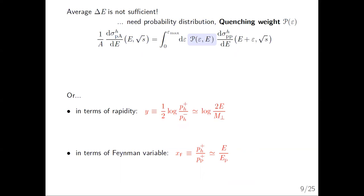The important point of the spectrum is that it allows you to relate, for example, the pA cross-section to the PP cross-section. That is done in terms of a probability distribution — a quenching weight — that tells you how to weight the energy shift. What you can construct from the induced spectrum is the quenching weight: if you know the PP cross-section, you can calculate the pA cross-section. This quenching weight is a probability distribution proportional to the induced spectrum times a Sudakov-like factor that you don't have any more radiation.